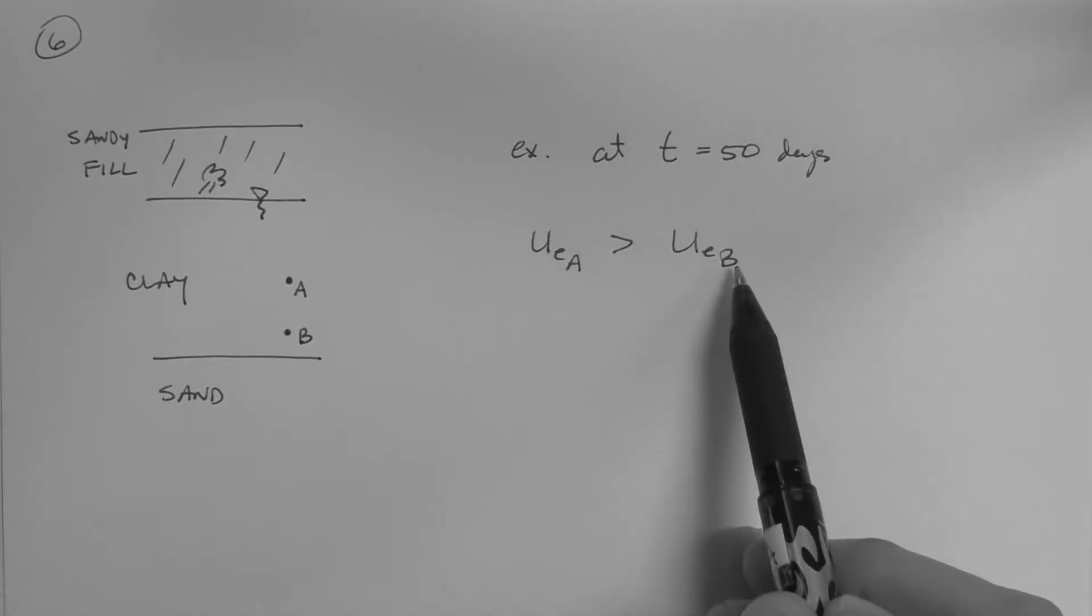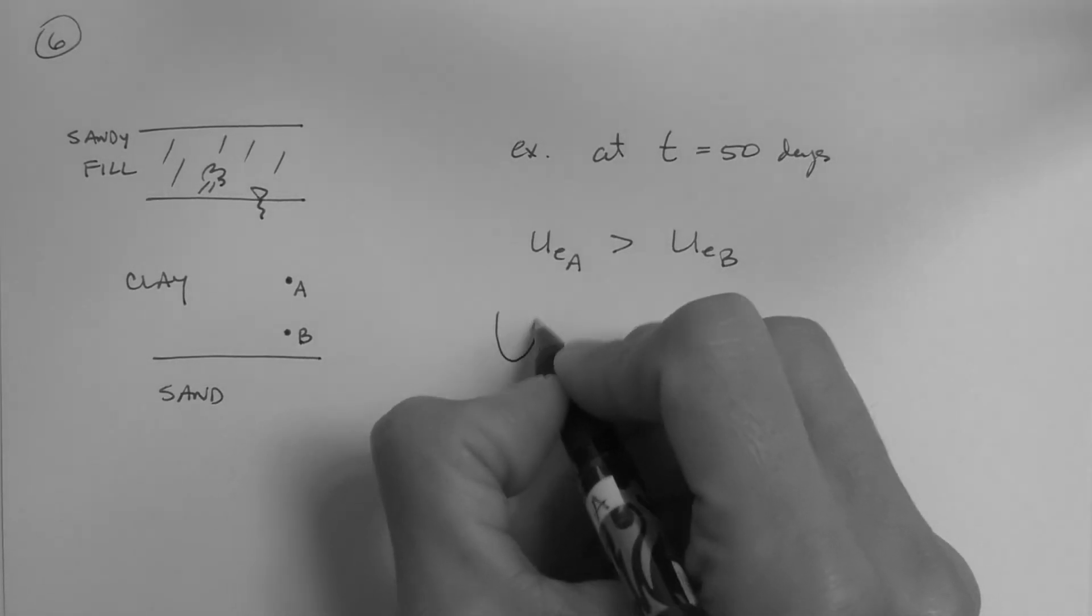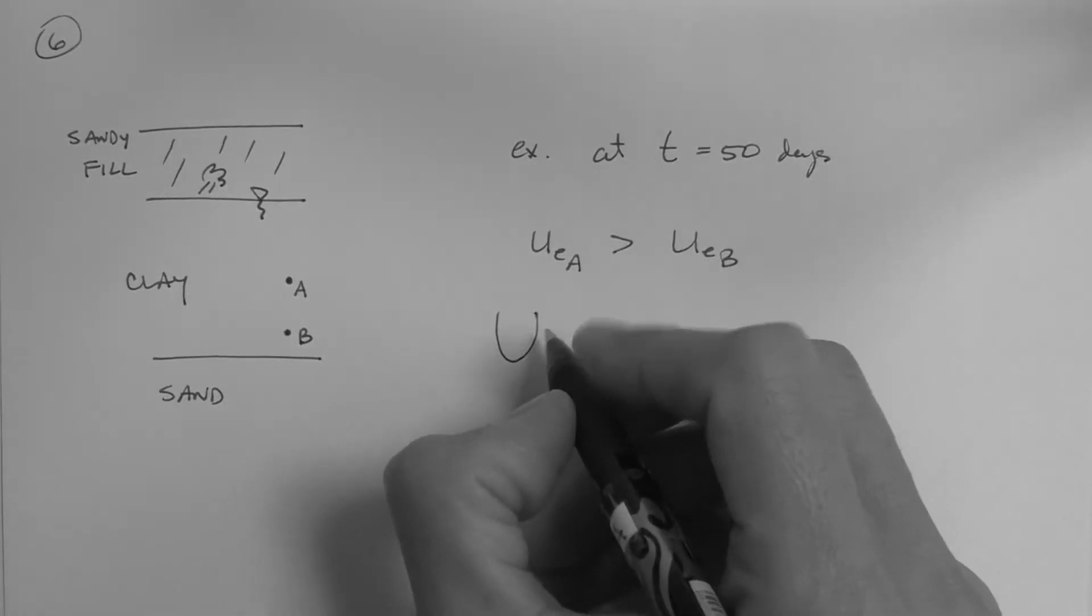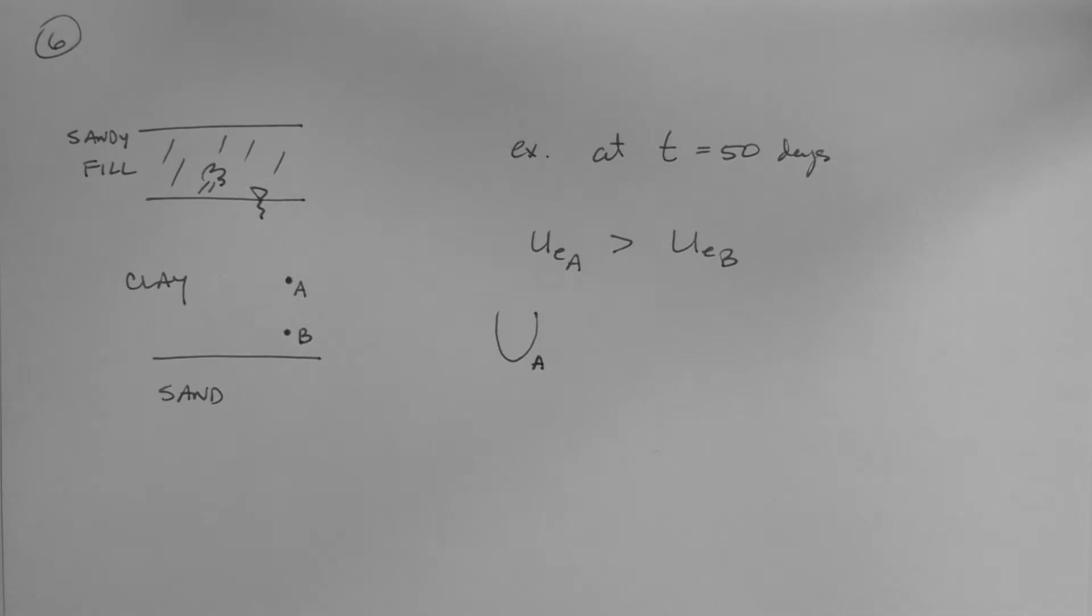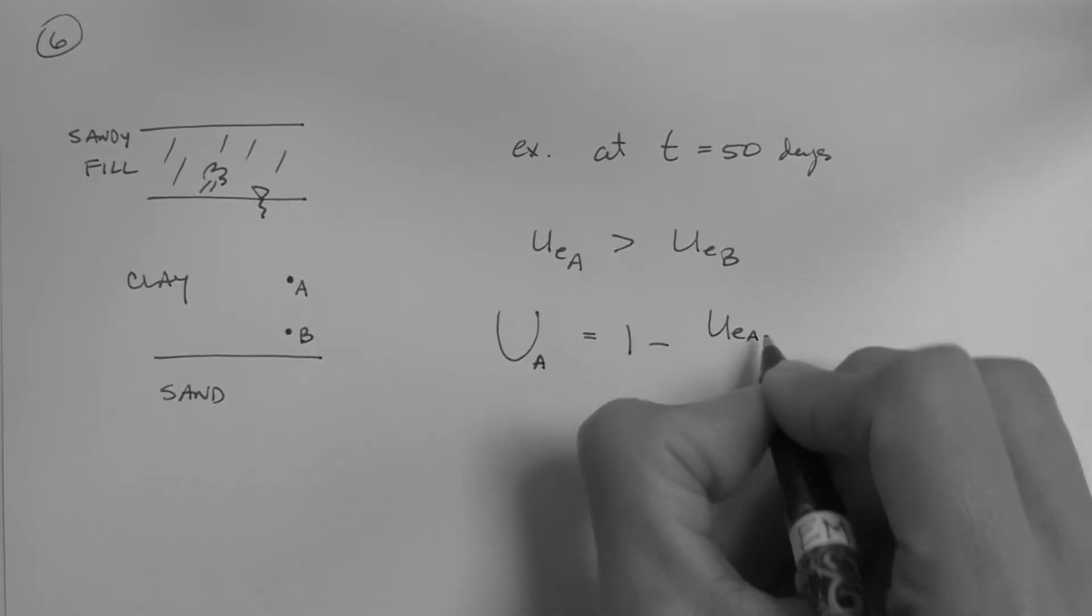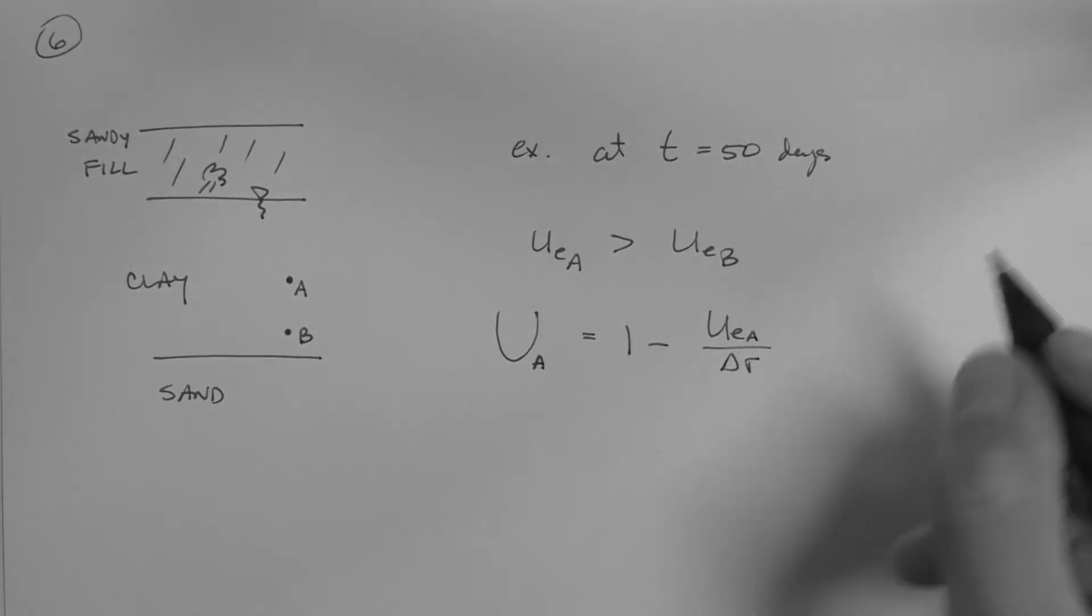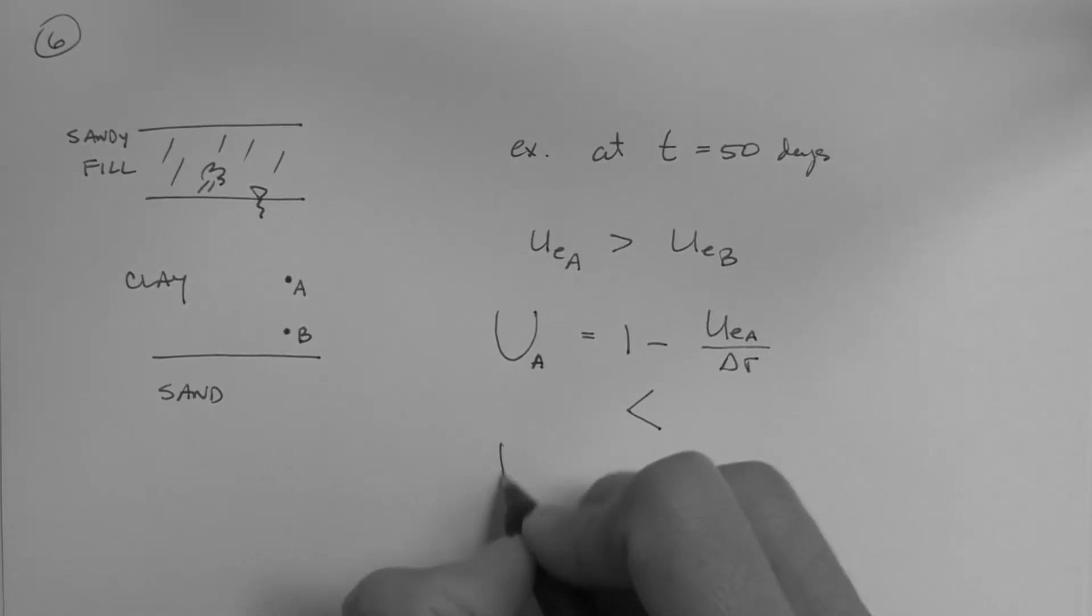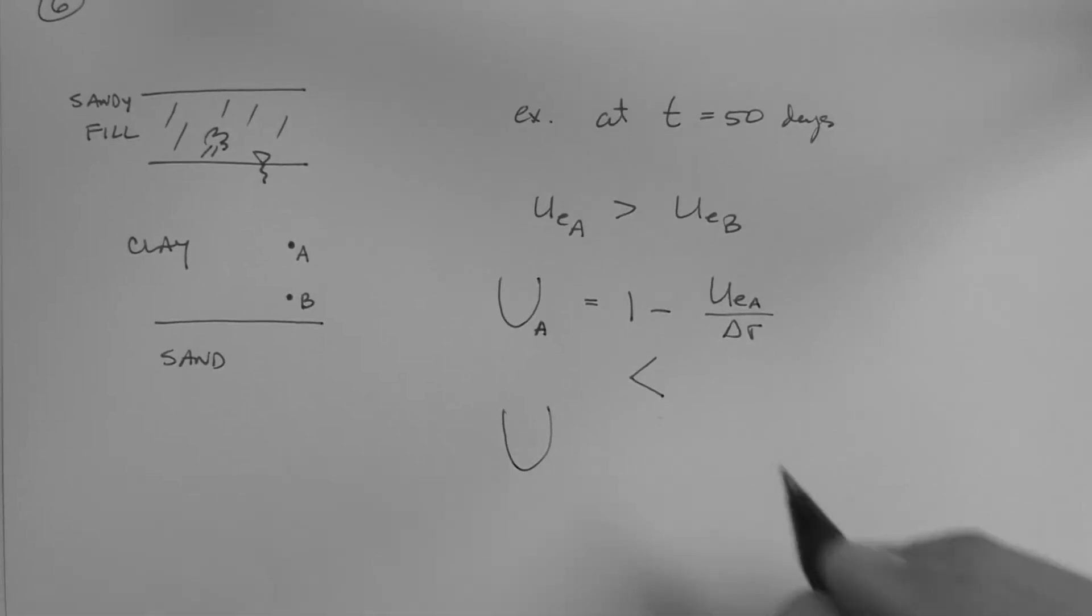Given that this excess pore pressure is larger than this one, then we can say that the degree of consolidation at point A, which is 1 minus UeA over delta sigma, is smaller than the degree of consolidation at point B.